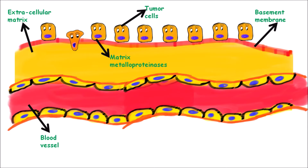Next, the tumor cell binds onto the basement membrane of the blood vessel. It will again secrete matrix metalloproteinases which break down this basement membrane, and then it encounters the endothelial cells lining the blood vessel. It will again break down those endothelial cells and squeeze in through the holes created by this digestion, slowly entering into the blood vessel.